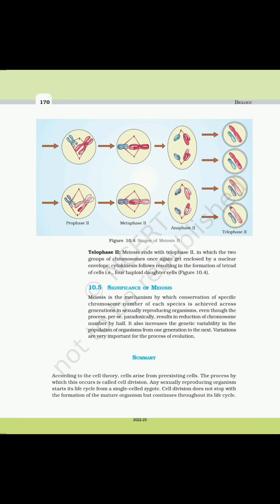10.5 Significance of Meiosis. Meiosis is the mechanism by which conservation of the specific chromosome number of each species is achieved across generations in sexually reproducing organisms, even though the process itself paradoxically results in reduction of chromosome number by half. It also increases the genetic variability in the population of organisms from one generation to the next. These variations are very important for the process of evolution.